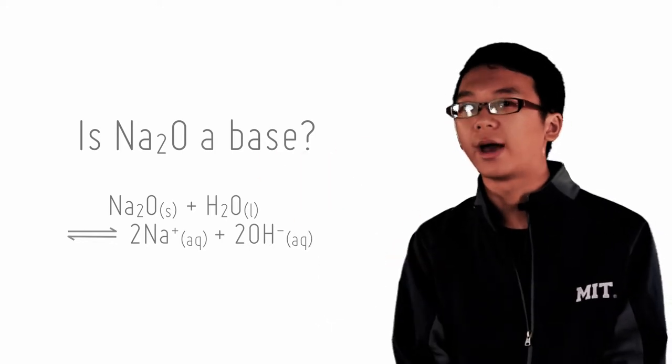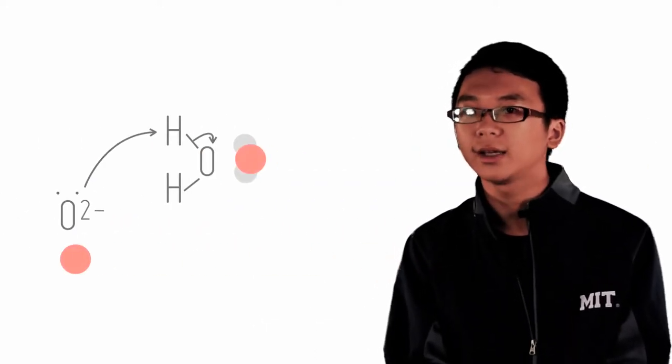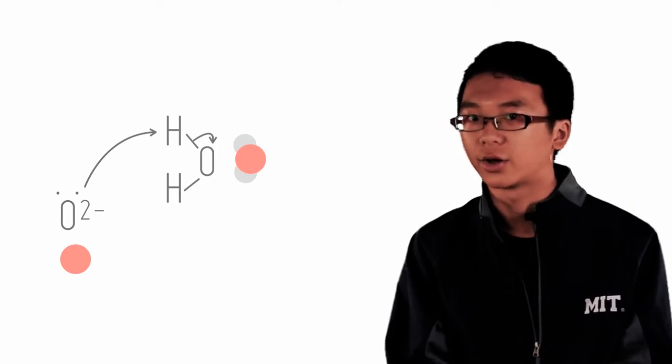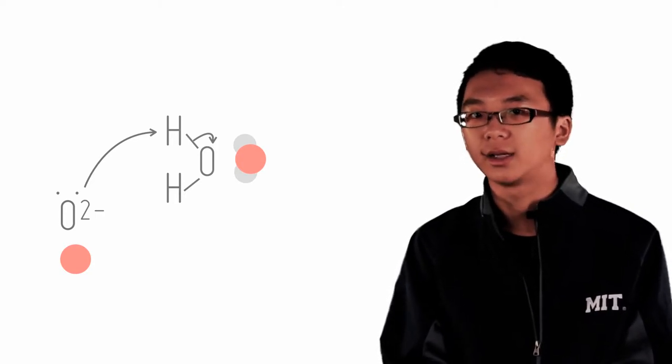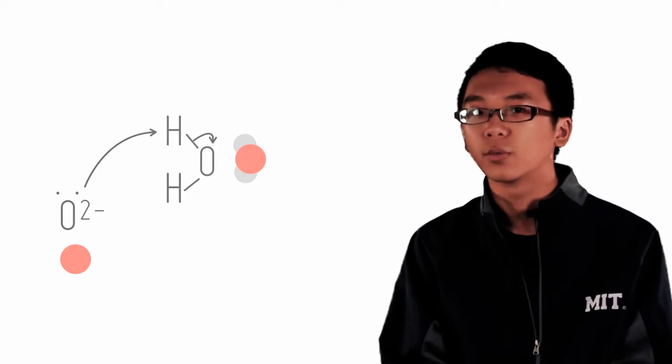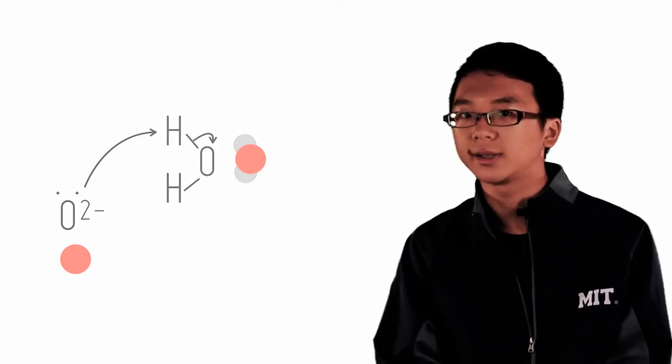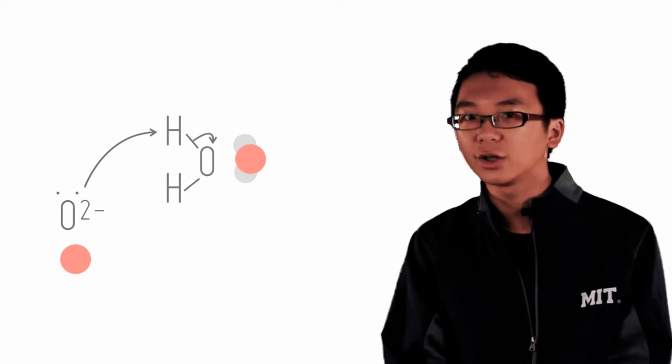Let's look at the mechanism of how Na2O reacts with water. Na2O is an ionic compound, so it is a collection of Na+ ions and O2- ions in the crystal lattice. When dissolved in water, O2- ions attack water, which subsequently breaks up to form hydroxide ions.